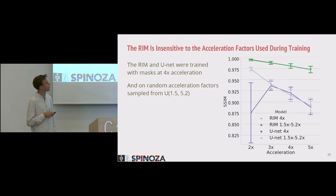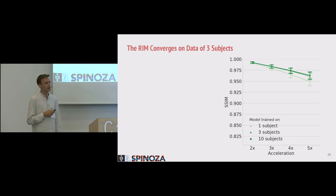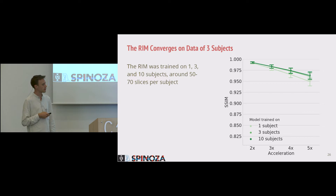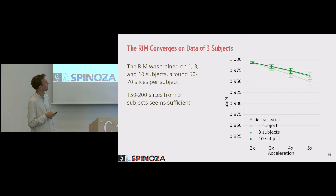We also wondered how much data is required to train a recurrent inference machine. We trained using one, three, and ten subjects with around 50 to 70 2D slices per subject. The discrepancy between one and three subjects is notable, but going from three to ten is really marginal. We suggest that three subjects using 150 to 200 slices should be enough, which is good news because raw data is hard to come by.